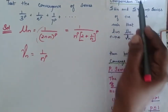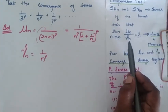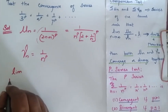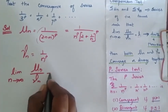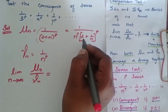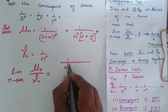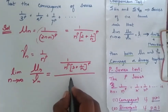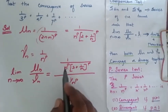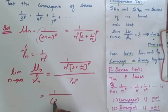As per the comparison test we have to find the limit N tends to infinity of UN by VN. So UN is 1 over N power P times (2 plus 1 by N) to the power P, and VN is 1 by N power P. The 1 by N power P and N power P will cancel, and I will get 1 by (2 plus 1 by N) to the whole power P.